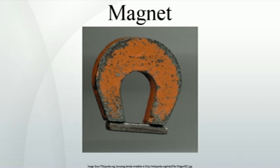Many materials have unpaired electron spins, and the majority of these materials are paramagnetic. When the spins interact with each other in such a way that the spins align spontaneously, the materials are called ferromagnetic. Because of the way their regular crystalline atomic structure causes their spins to interact, some metals are ferromagnetic when found in their natural states as ores. These include iron ore, magnetite or lodestone, cobalt, and nickel, as well as the rare earth metals gallium and dysprosium when at very low temperatures. Technology has since expanded the availability of magnetic materials to include various man-made products, all based on naturally magnetic elements.